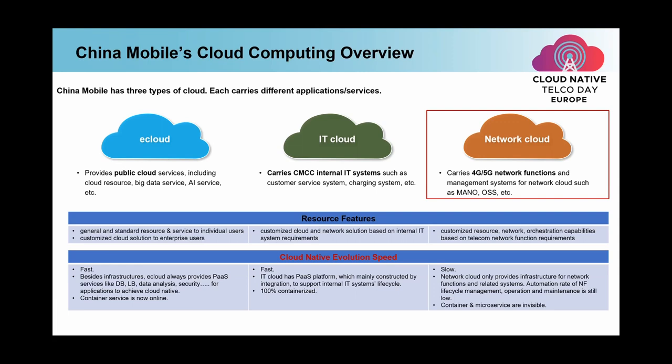The third cloud is network cloud. This is the most important cloud for us as an operator. It carries 4G and 5G network functions, value-added network functions such as multimedia messaging services, and some network function-related management systems are also on this cloud — for example, the MANO and EMS. This cloud is also a private cloud that has strong telecom features.